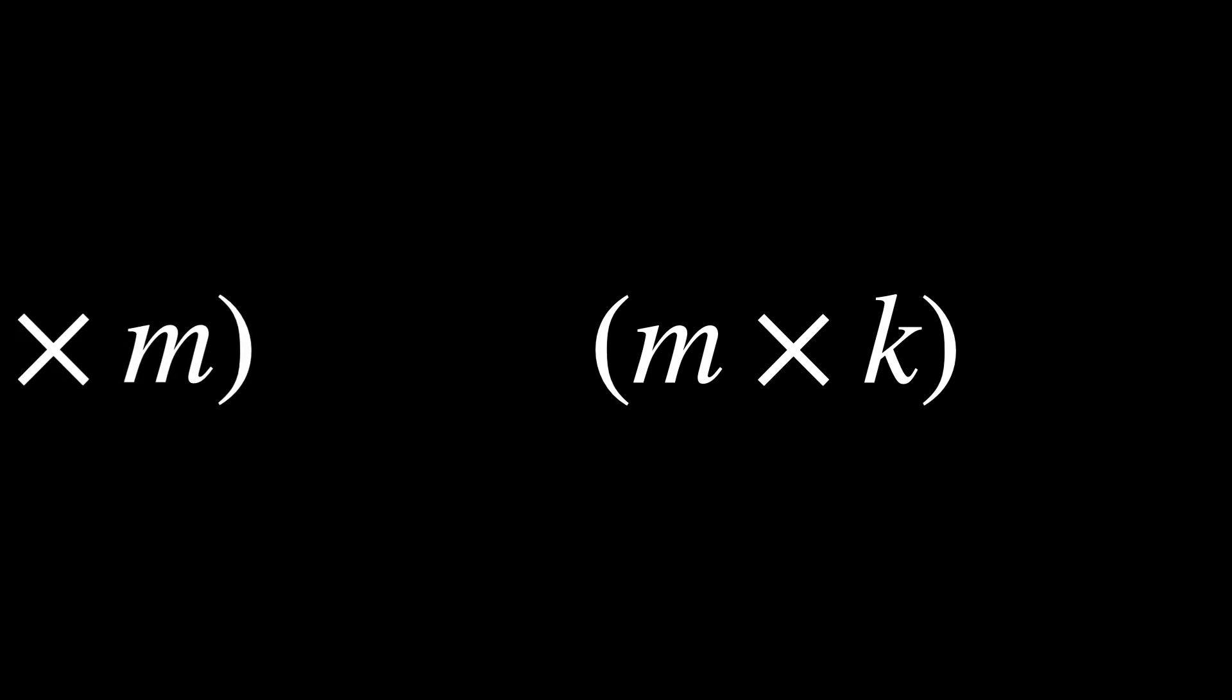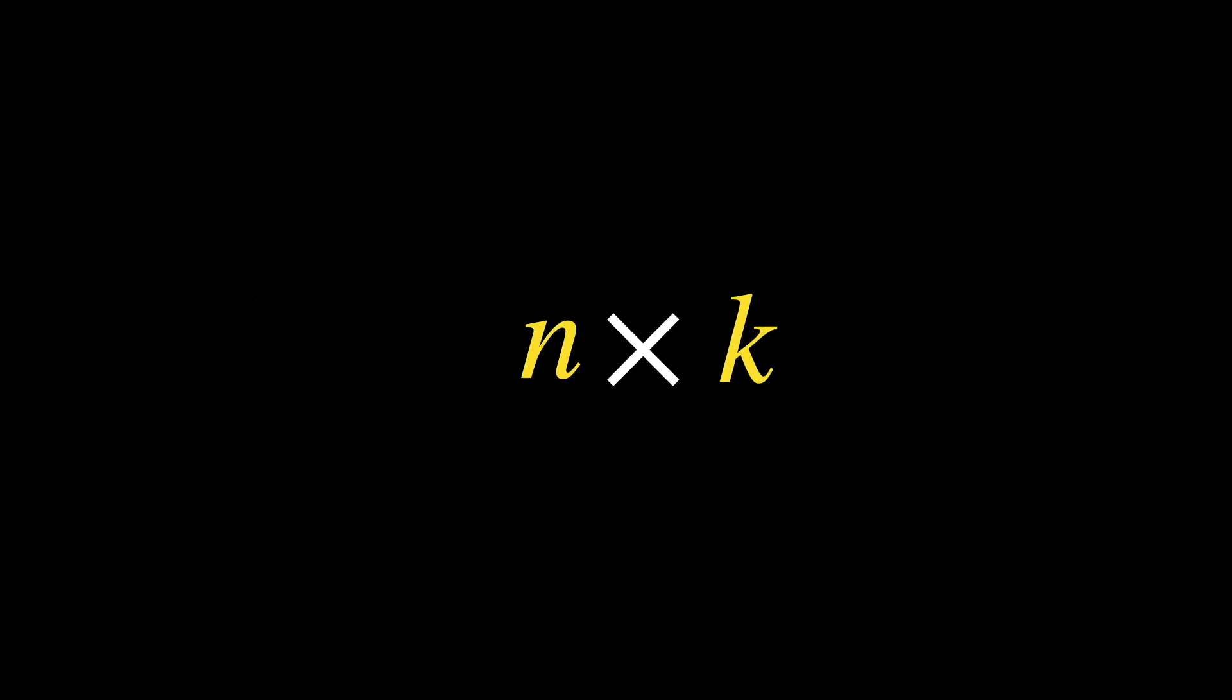Then, we apply our n by m transformation. We start in an m-dimensional space from our previous mapping, then map to an n-dimensional space. We can simplify this, stating the whole transformation, in other words, the resultant matrix, is a transformation from a k-dimensional space to an n-dimensional space. That is an n by k matrix.